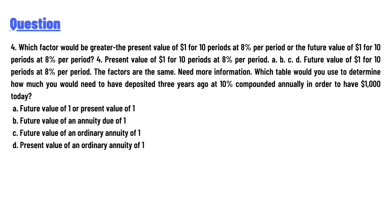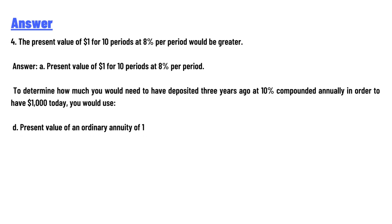The present value of $1 for 10 periods at 8% per period would be greater. Answer A: Present value of $1 for 10 periods at 8% per period. To determine how much you would need to have deposited 3 years ago at 10% compounded annually in order to have $1,000 today, you would use: